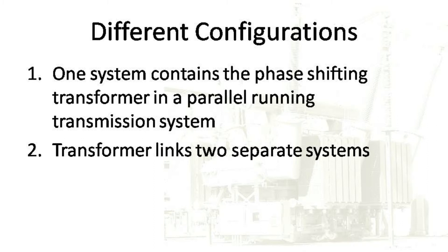The phase shift is accomplished by the interconnection of two phases of star-connected windings across one of the delta-booster winding phases. The magnitude and polarity of the phase shift may be modified by changing the on-load tap changer, which in turn determines the circulating current within the system.